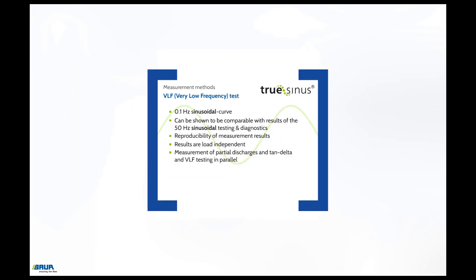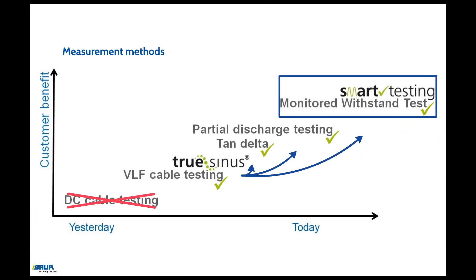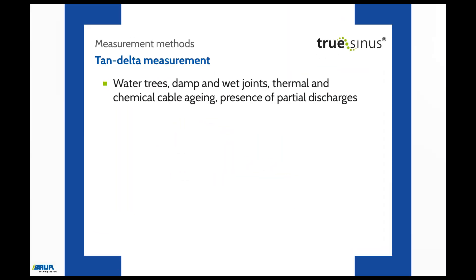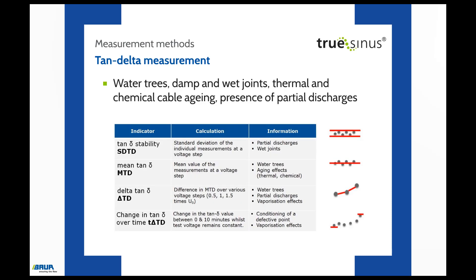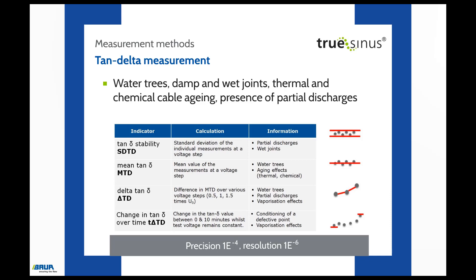The TAN-delta measurement provides information about water trees, damp and wet joints, and thermal and chemical cable aging. It also indicates the presence of partial discharges. Three parameters are needed for the TAN-delta measurement: mean TAN-delta, standard deviation, and delta TAN-delta. The standard deviation in particular provides a great deal of information. Prerequisites are a high TAN-delta precision of 1×10⁻⁴ and a high resolution of 1×10⁻⁶.